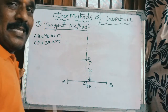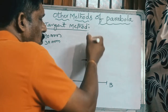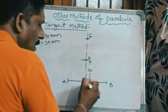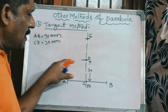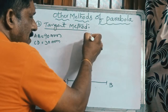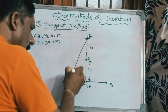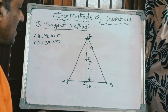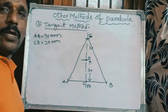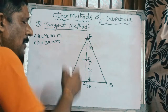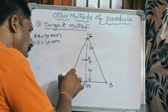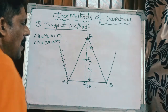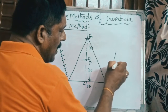Next, take double the minor axis length: since 30 mm is given, mark another 30 mm above D to get point E at 60 mm total. Now join E to A and E to B by straight lines, giving you a triangle EAB. Divide side AE into equal number of parts — say seven — using the indirect method by drawing an incline line and projecting parallel lines. Similarly divide EB into the same seven equal parts.